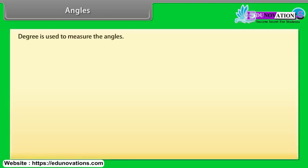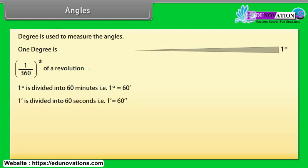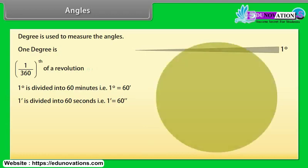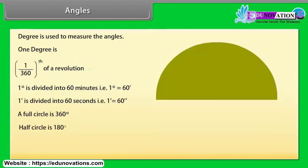How to measure degrees? Degree is used to measure angles. One degree is 1/360th of a revolution. One degree is divided into 60 minutes, that is, 1° = 60'. One minute is divided into 60 seconds, that is, 1' = 60". There are 360 degrees in one full rotation. A full circle is 360°, and a half circle is 180°.